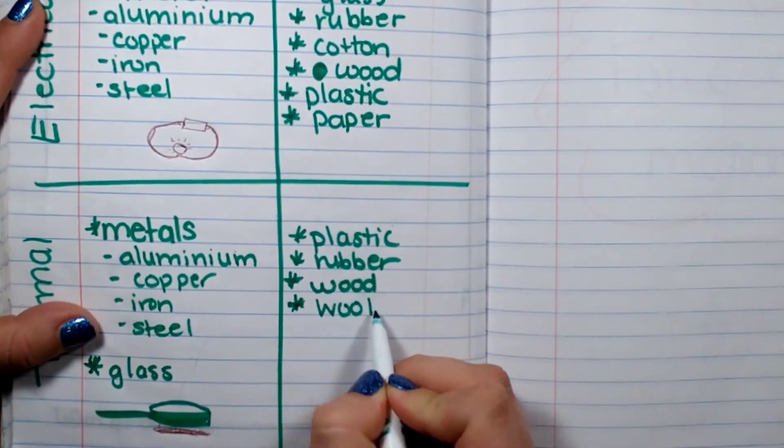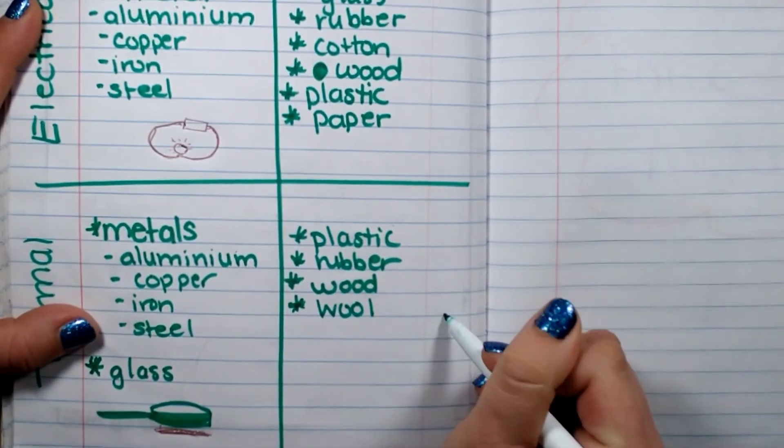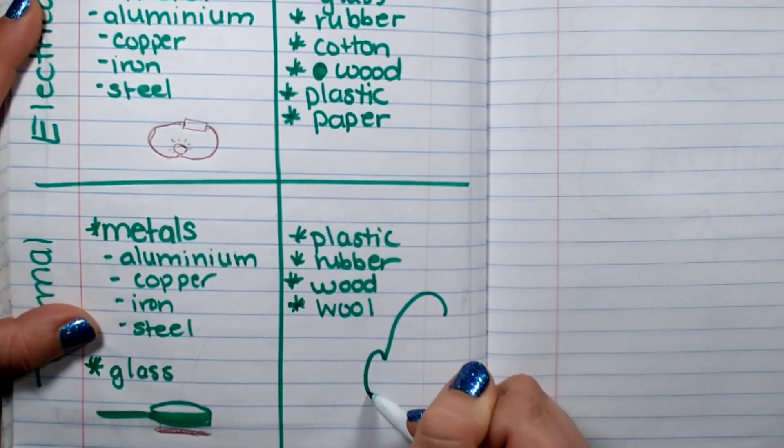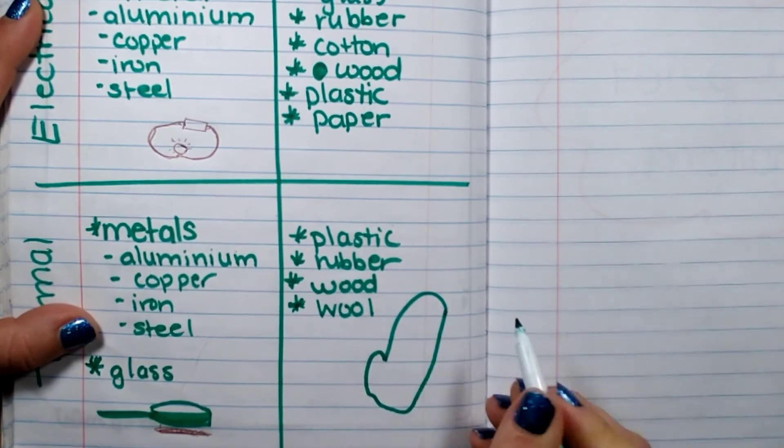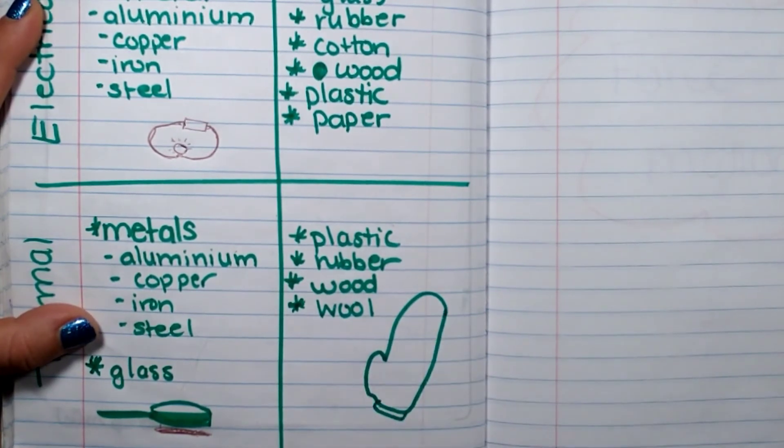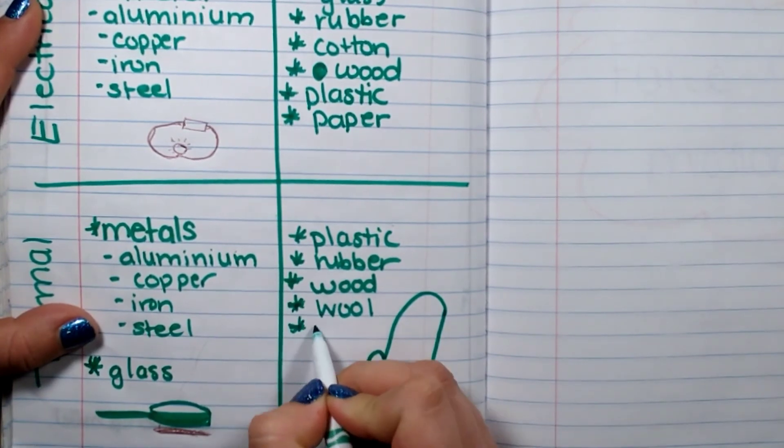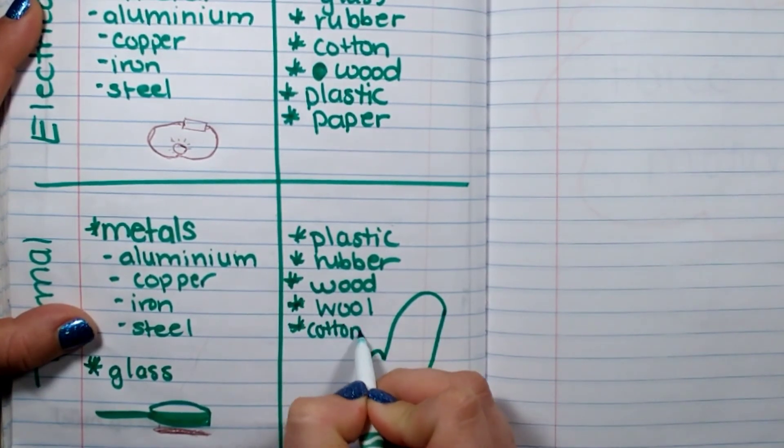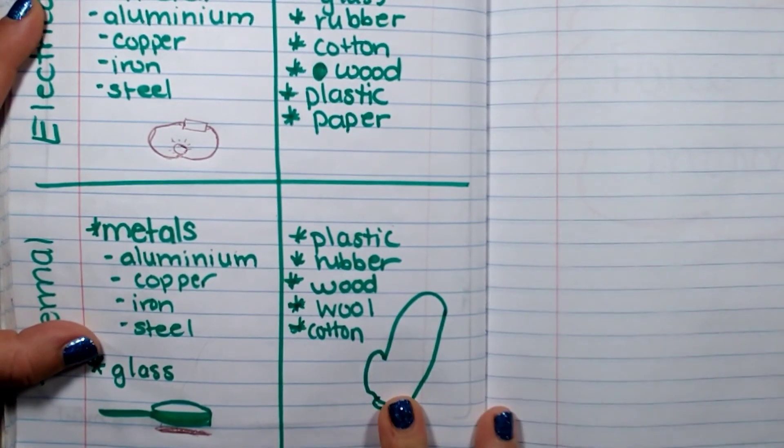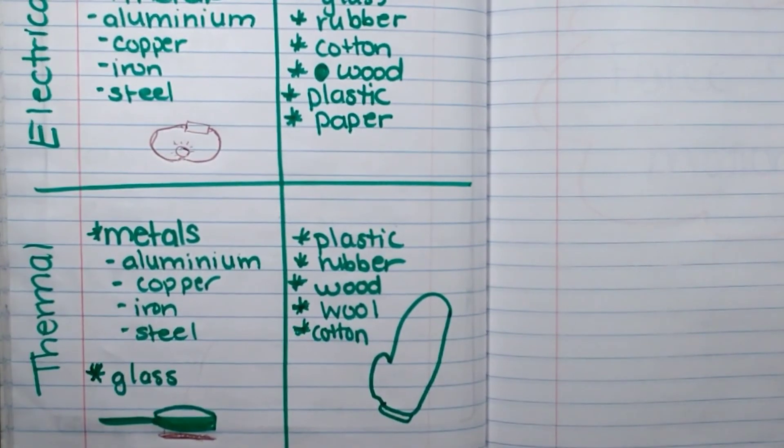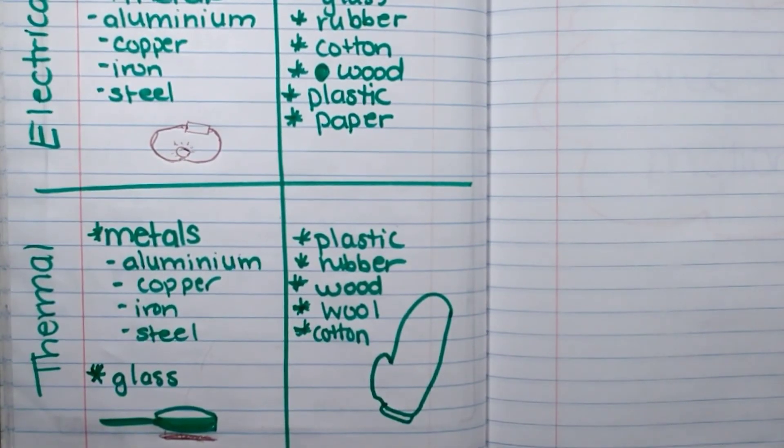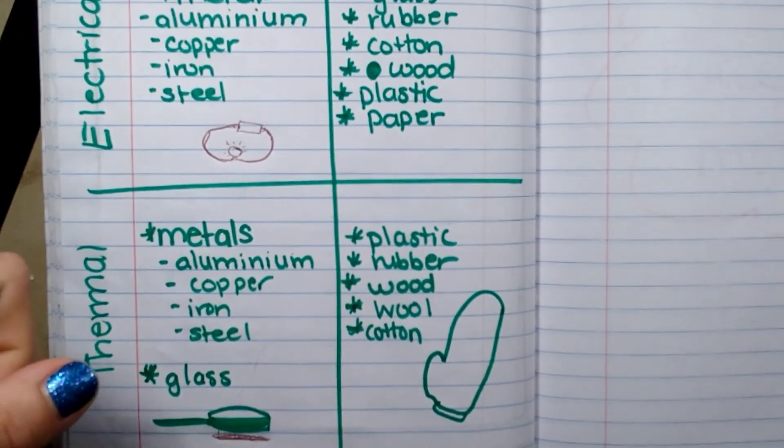Also, wool like an oven mitt. That stops the flow of thermal energy so we can get something out of the oven without getting burned. So those are conductors and insulators.